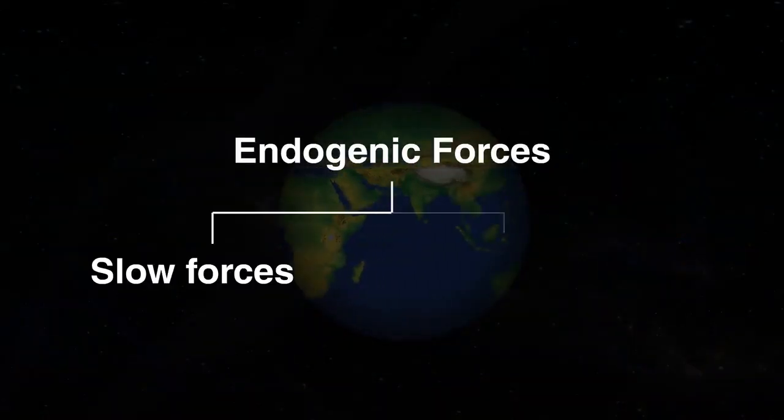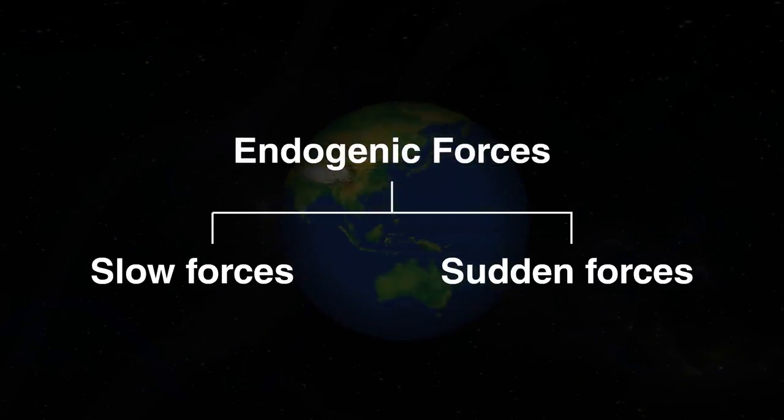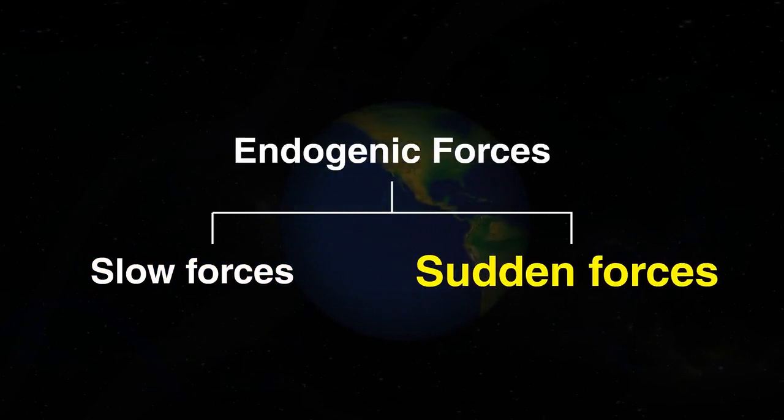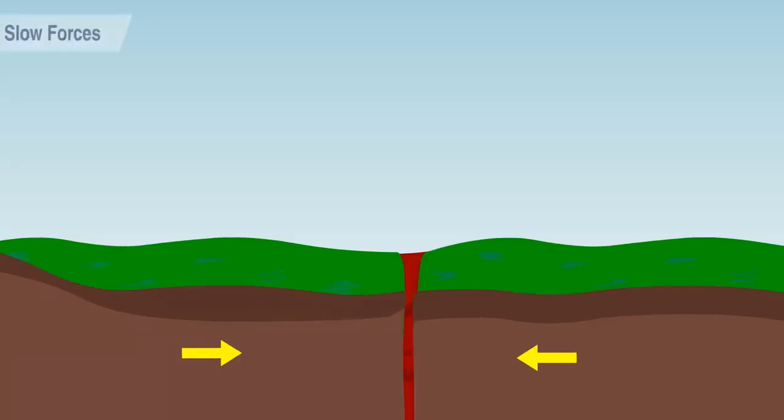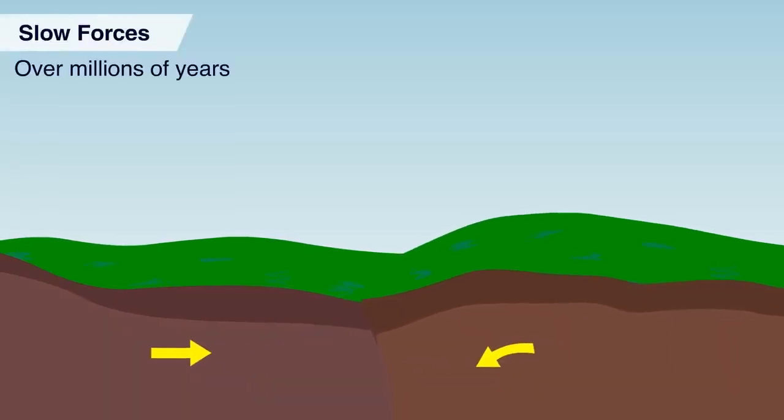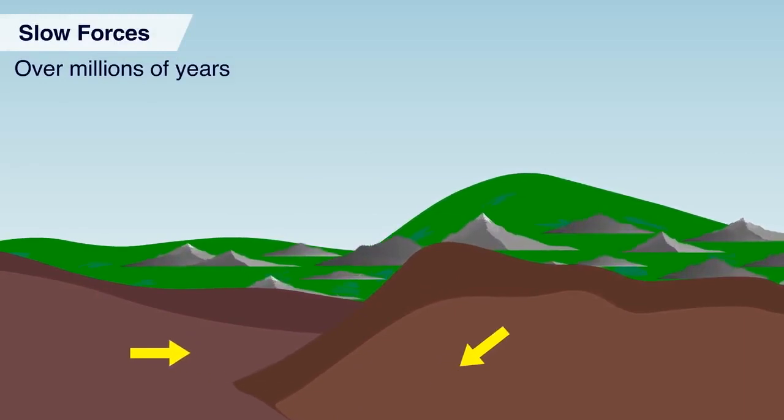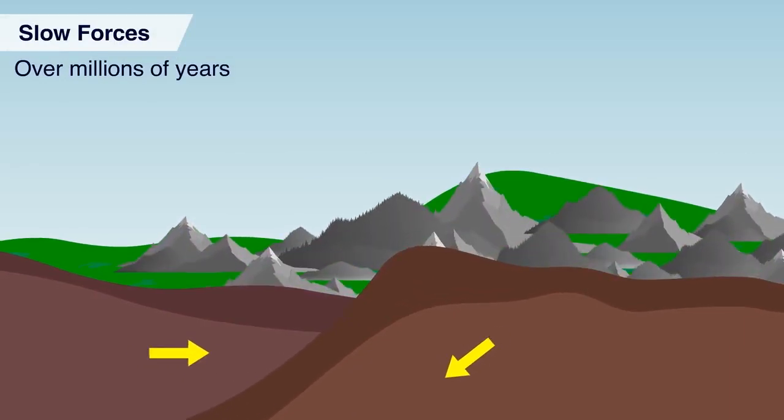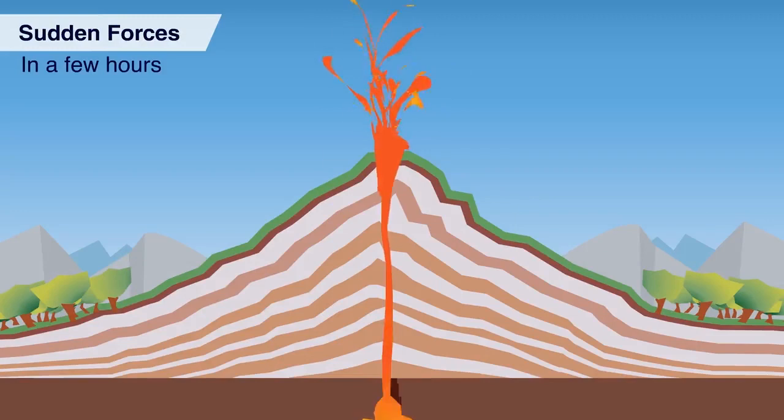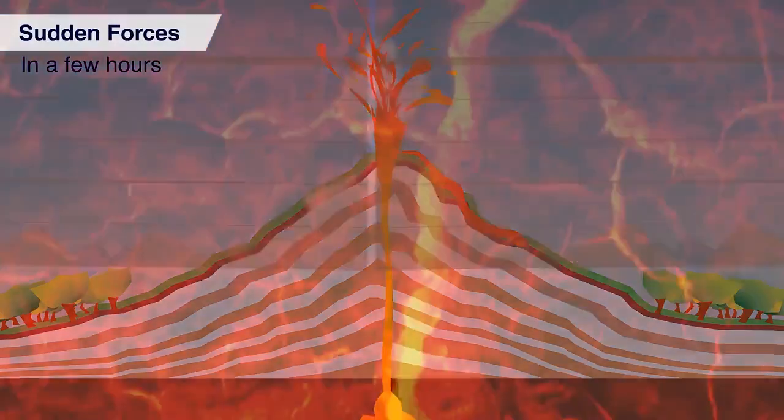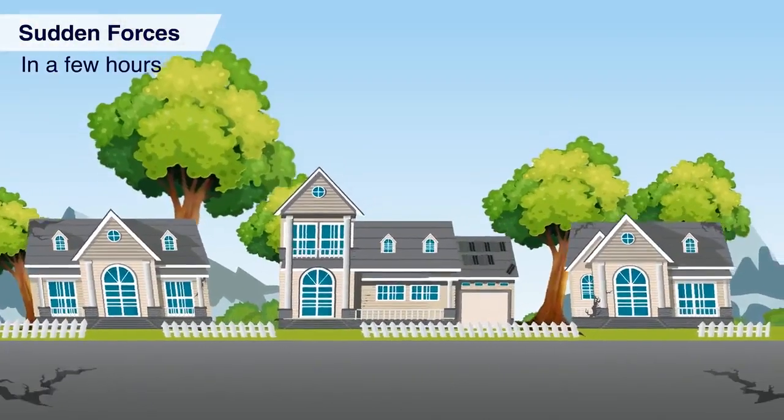This causes two types of endogenic forces: slow forces and sudden forces. Slow forces, as you can see, cause the formation of mountains. This is how the Himalayas were formed. Sudden forces result in volcanic eruptions and earthquakes.